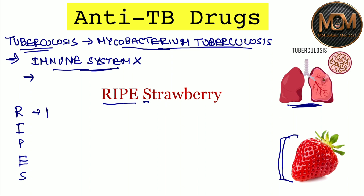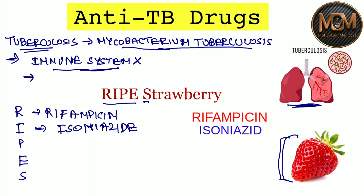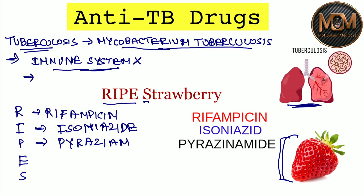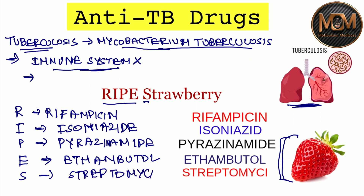From the R we have Rifampicin, from the I we have Isoniazid, from the P we have Pyrazinamide, from the E we have Ethambutol, and from the S we have Streptomycin. With the help of this mnemonic you can easily learn the anti-TB drugs — RIPES.